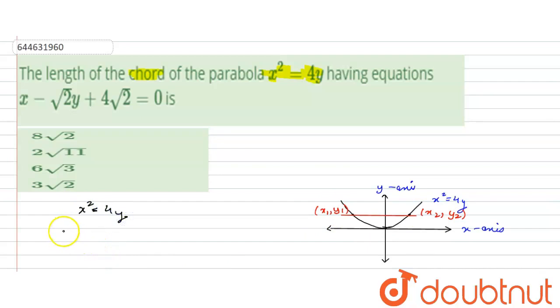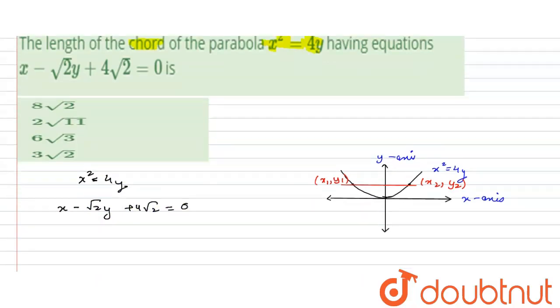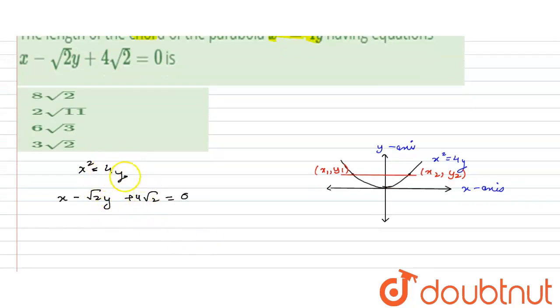And the equation of chord is x minus √2y plus 4√2 is equal to zero. So we can replace the value of y from this equation into this: x² is equal to 4 times (x plus 4√2) by √2.